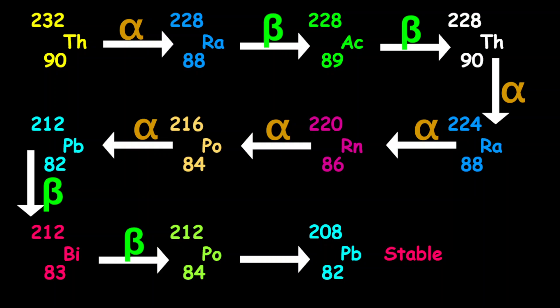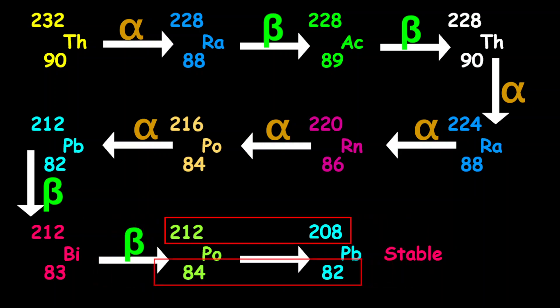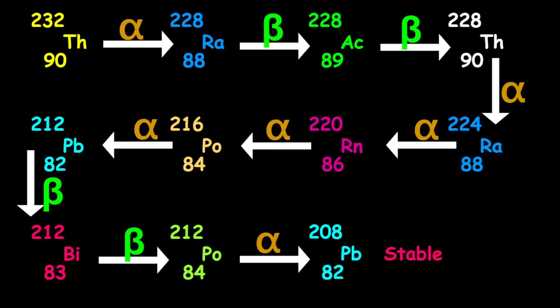For the final decay, moving from polonium-212 into lead-208, the mass number decreased by 4 and the proton number decreased by 2, so this is an alpha decay.